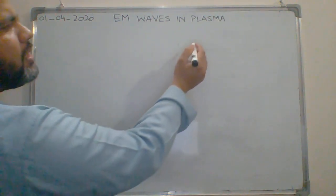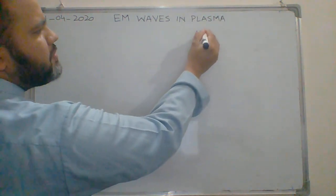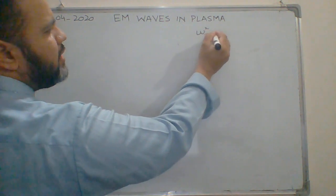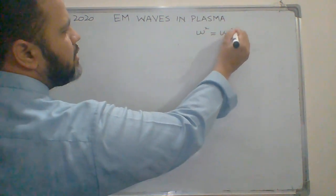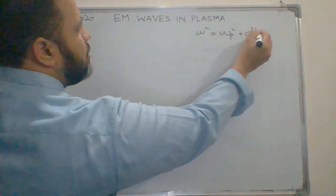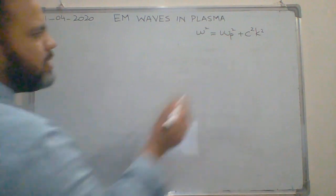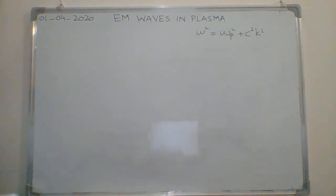We have derived the expression for electromagnetic waves in plasma in the absence of a magnetic field. Now we are interested in finding out the dispersion relation for electromagnetic waves in plasma in the presence of the magnetic field.